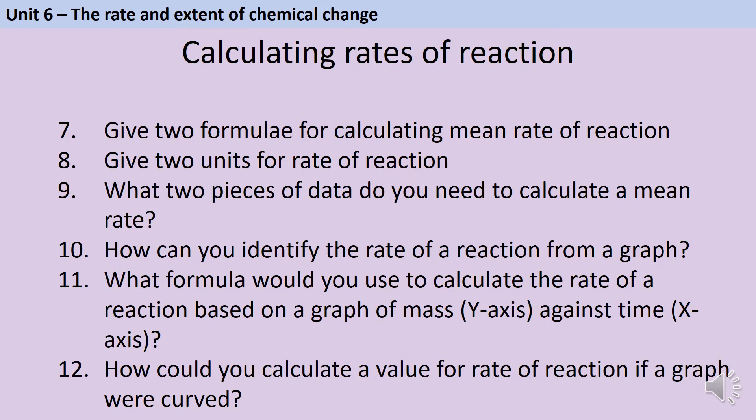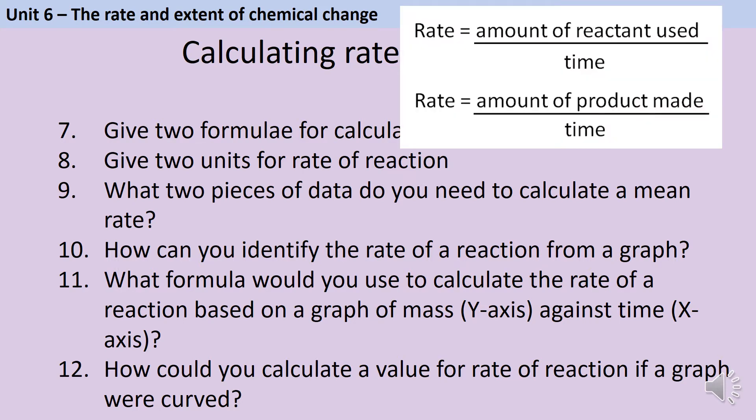The two formulas listed in the specification for calculating mean rate of reaction are: rate of reaction equals amount of reactant used divided by time, and rate of reaction equals amount of product formed divided by time. There are lots of different units you could use, but the ones listed in the specification are grams per second or centimeters cubed per second. You could have mass or volume with slightly different units like kilograms or decimeters cubed, and different times like minutes or hours, but it's always either a mass or a volume divided by a time.